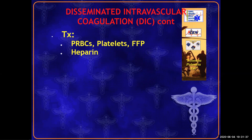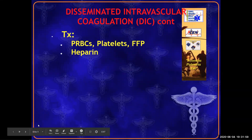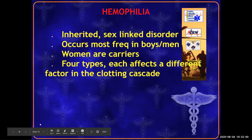It seems counterintuitive that you give heparin to a patient who's bleeding out, but it's buying time to protect organs — like the kidneys — from clots getting bigger and shutting them down. As the body heals and the hematologic system comes back online, it will replace clotting factors and platelets and begin to heal itself. The basics: replace blood products and protect organs with heparin.